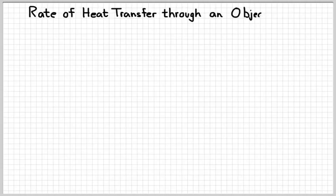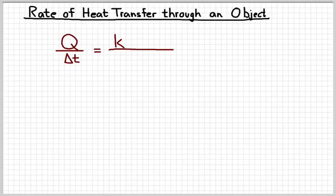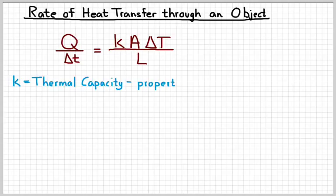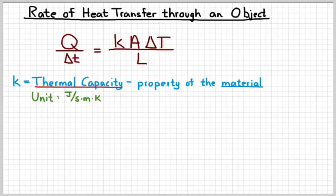So we can kind of put that all together in a relatively simple equation. The rate of heat transfer, A and delta T, go on top and L goes on bottom. And then that letter K in there represents the thermal capacity of that particular object. The thermal capacity is a property of the material, and it's a fundamental property. So iron, for example, will always have the same value of K, thermal capacity. These are things that are measured, and then when you need to look them up, you can look them up. The unit for the thermal capacity would be joules per second times meter times Kelvin. So all those on bottom of the fraction. And that way our unit for the rate of heat transfer is joules per second.